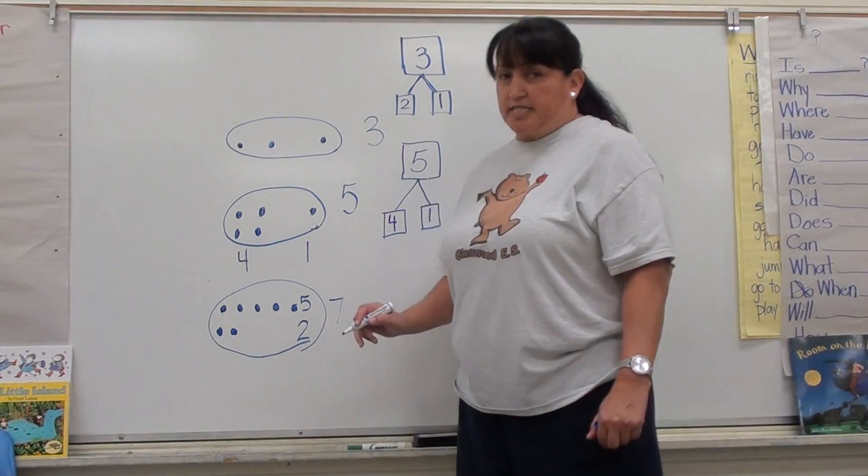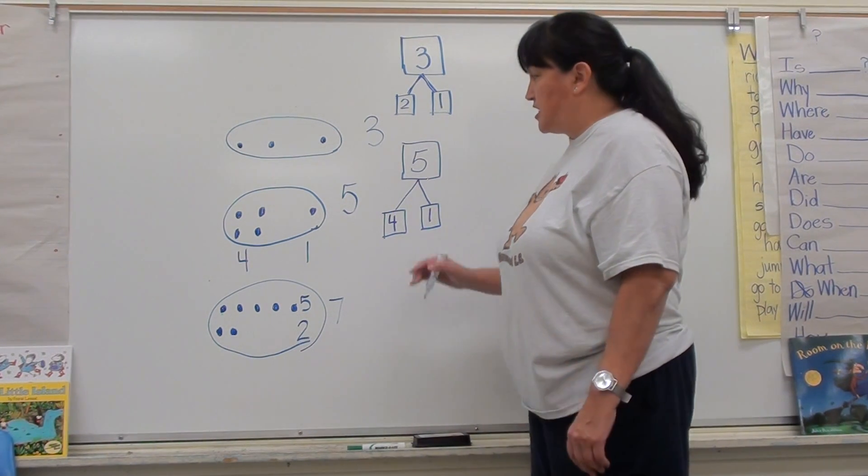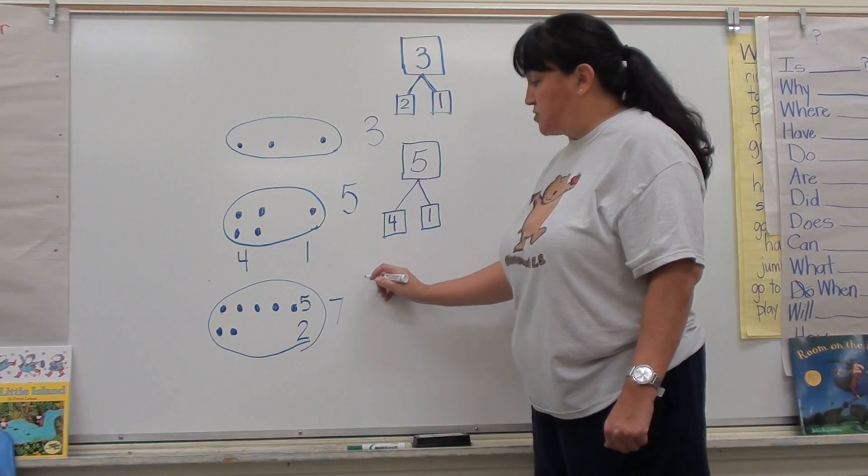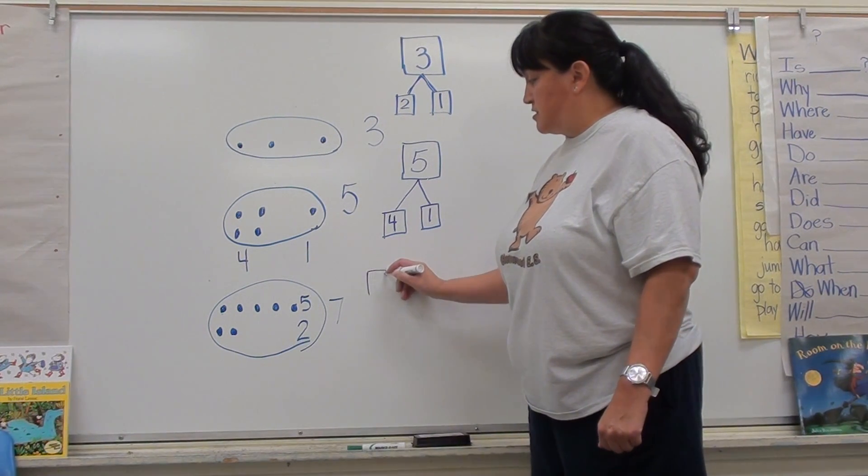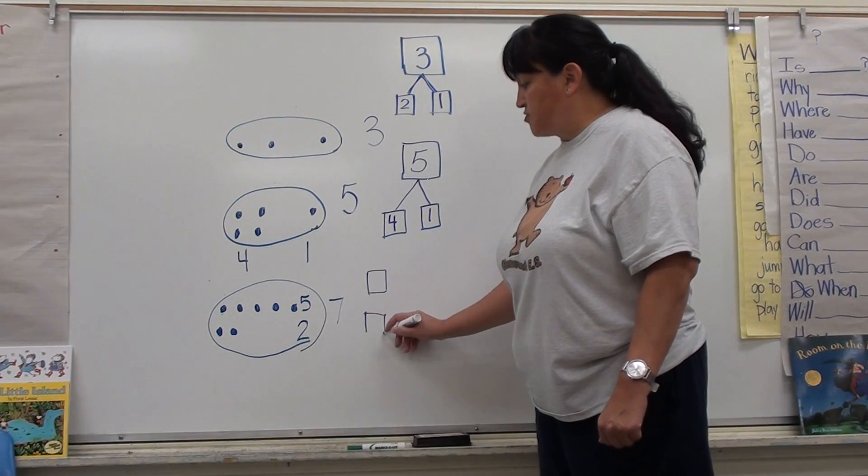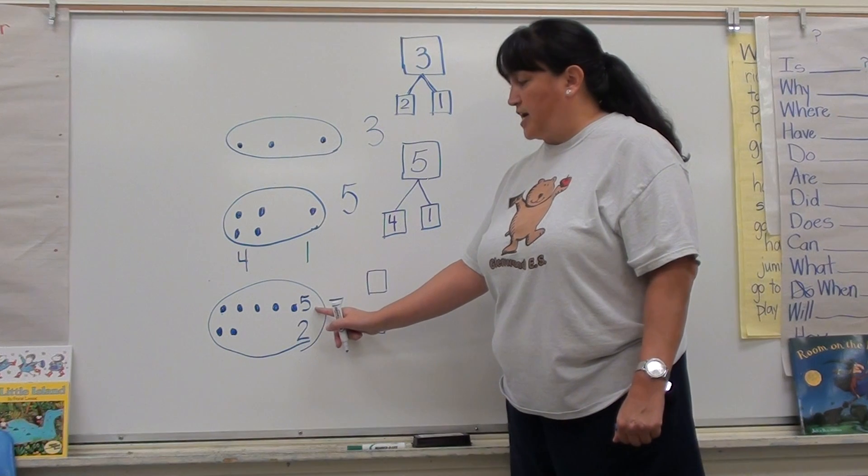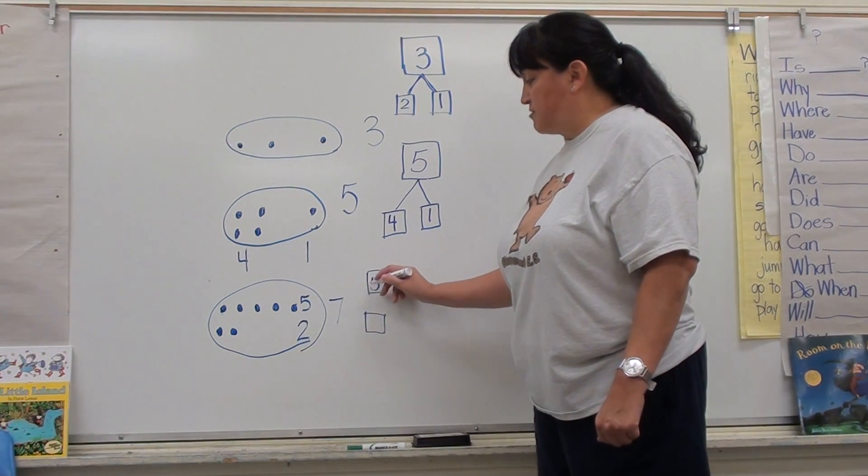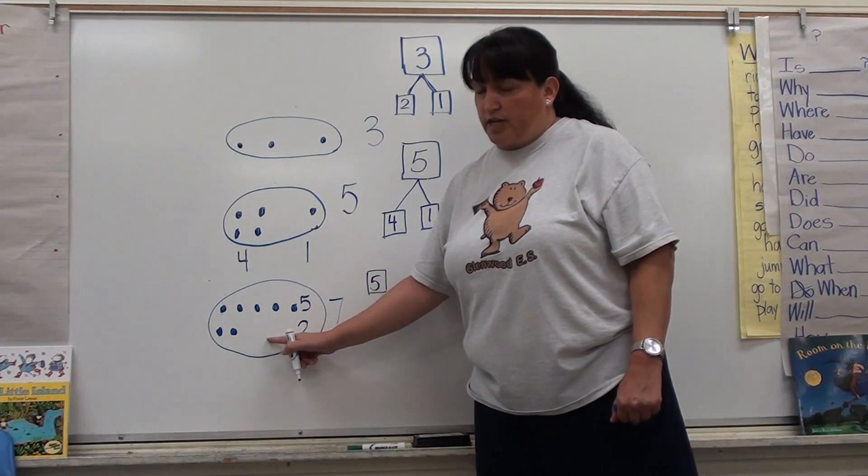This time, as I said, I'm going to make my number bond look a little bit different. These are going vertically up and down. I can also make my number bond go horizontally. Here's my small box and my other small box. Both of these are my parts. My parts are five and two. I can put the five first and the two on the bottom, just like it's shown right here.